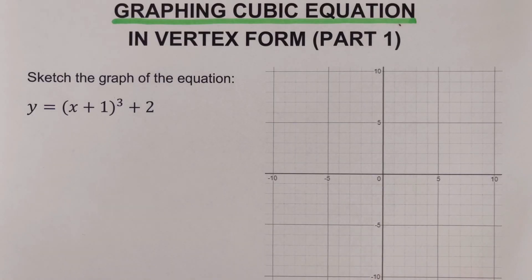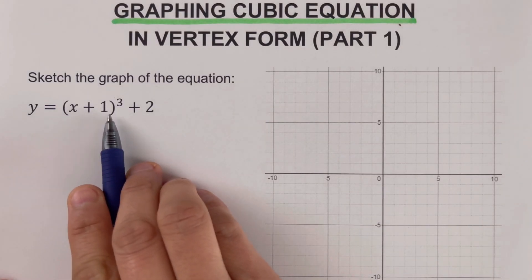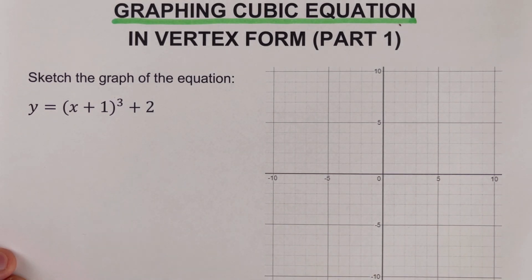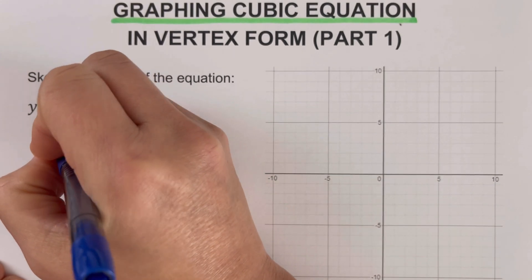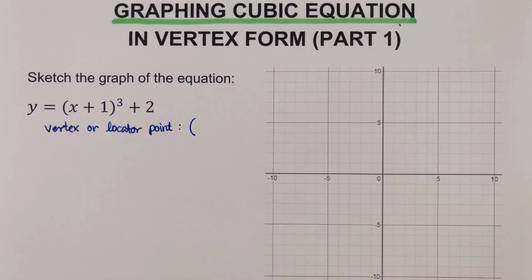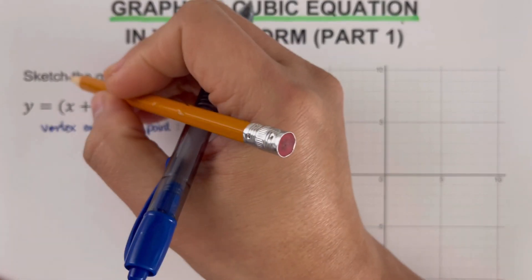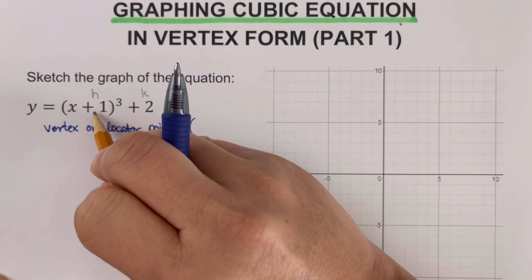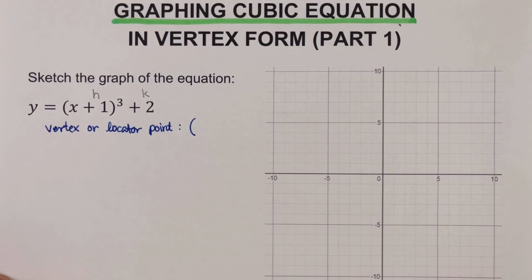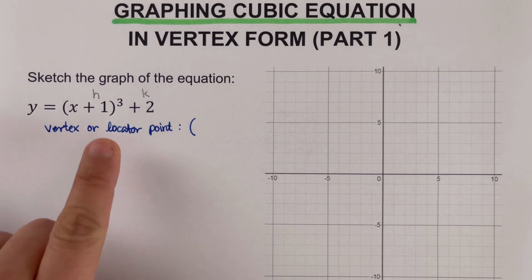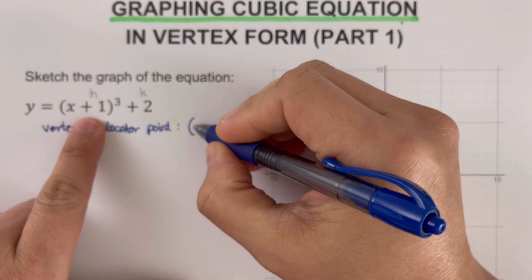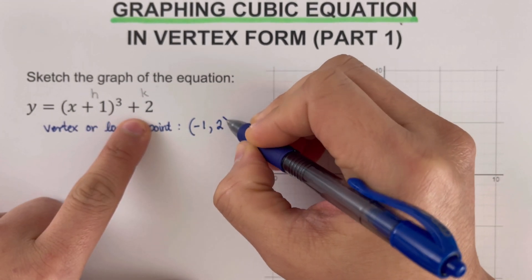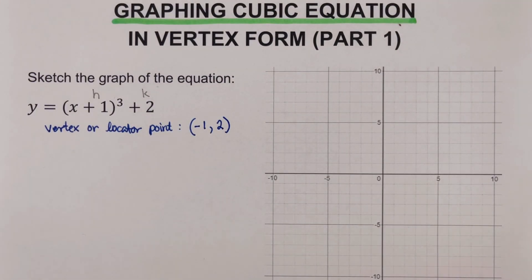Going back to the first problem, we are supposed to sketch the graph. The first step is to determine the vertex or locator point. The coordinates of the vertex are equal to (h, k). The trick to determine the coordinates is to switch the sign of h — so that comes out negative 1 — and keep the sign of k — that would be positive 2. So our vertex is going to sit at (−1, 2).